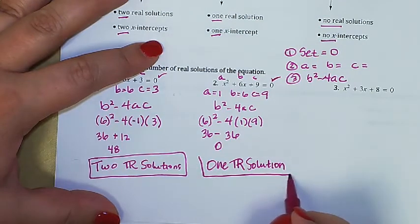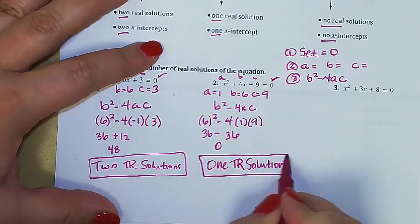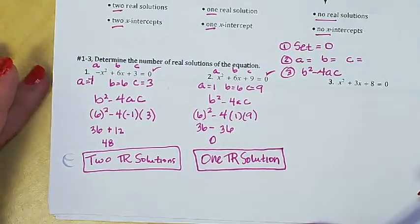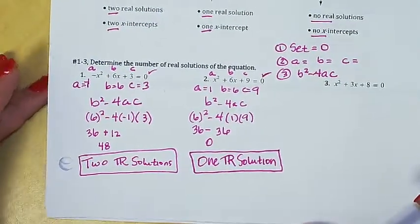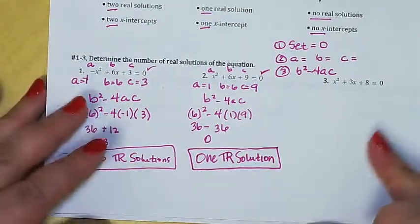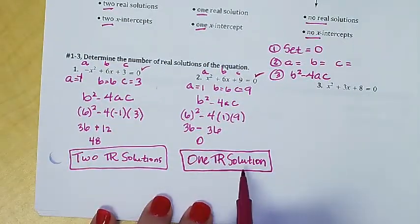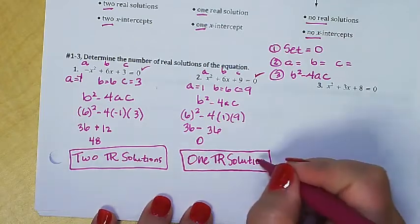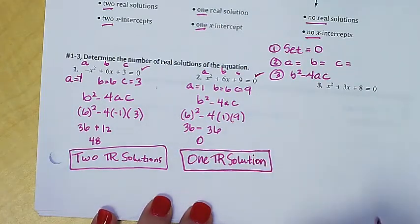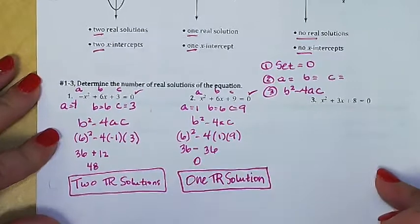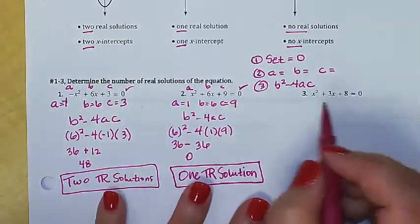Be careful — the discriminant is very handy for determining how many solutions an equation has, but it does not tell you what the solutions are. Don't think that the solution is zero; that's just the discriminant value, which tells you there's only one solution. If they want to know what that solution actually is, you would need to use the entire quadratic formula.